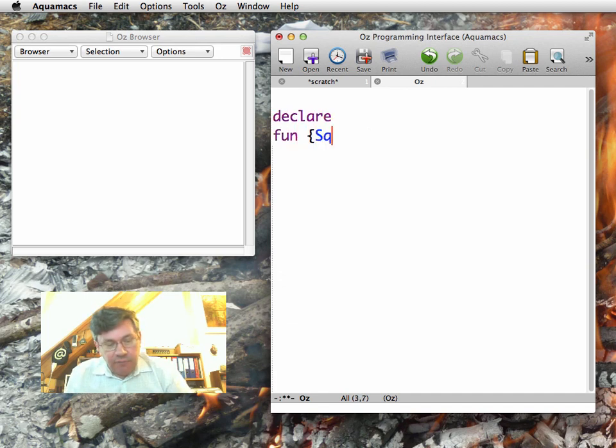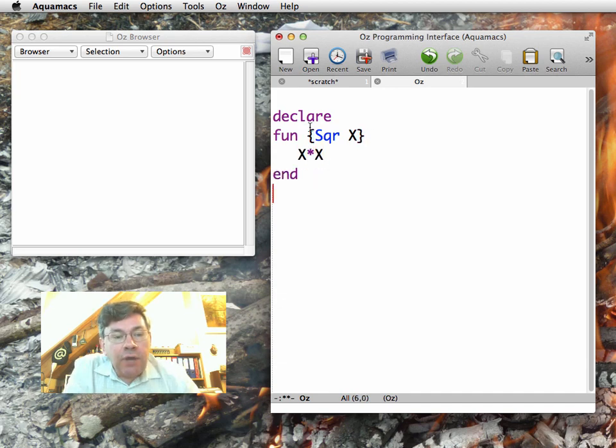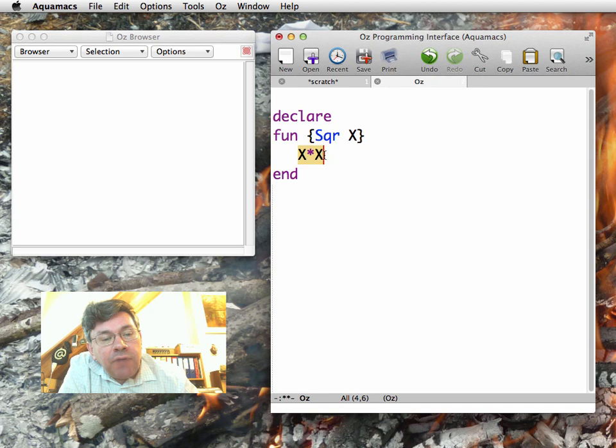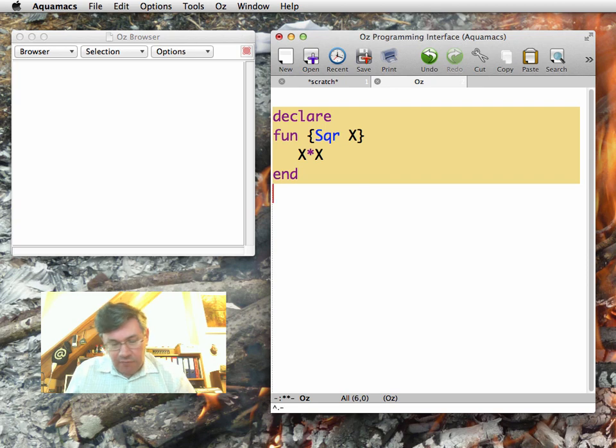Here is the function sqr x, which calculates x times x. A function is declared with the keyword fun, up until end. We have here first the header with the name of the function sqr and the arguments - here there's only one, x. Then the function calculates the expression x times x. This is the function definition, so I feed this to the system.